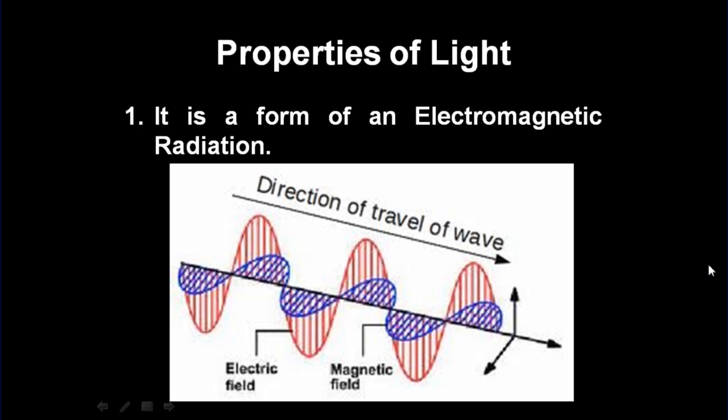By electromagnetic radiation we mean that it has got two fields associated with it. One is the electric field and the other is the magnetic field. Both these fields are mutually perpendicular and vibrate perpendicular to the direction of travel of the wave.